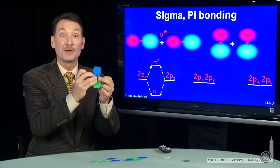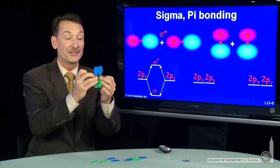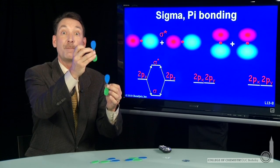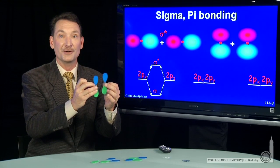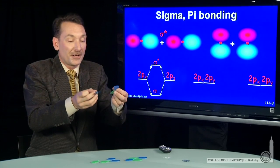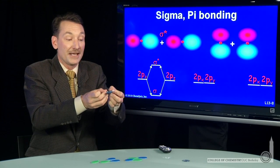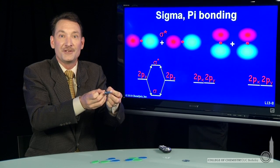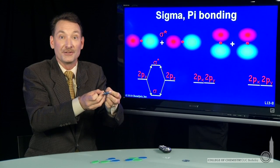Pi bonding orbitals and pi antibonding orbitals have their electron density above and below the internuclear axis. So I can get a pi bonding from the x, but I can also get a pi bonding from adding py and py. So two pi bonding orbitals.